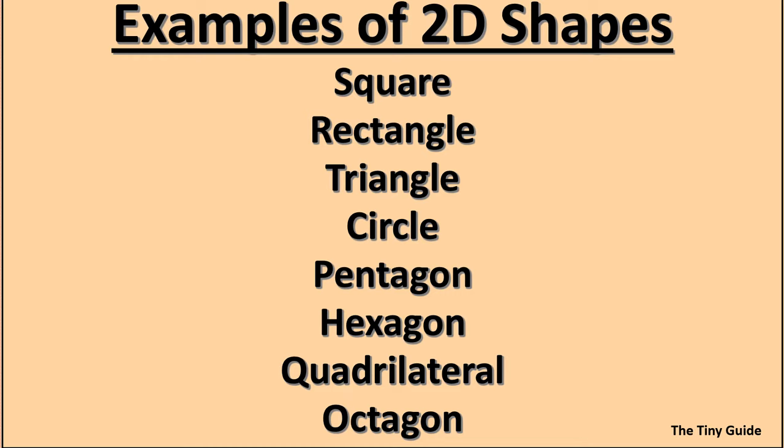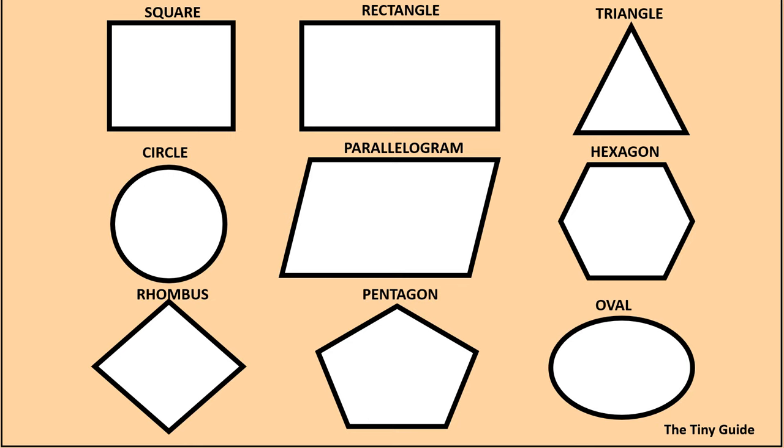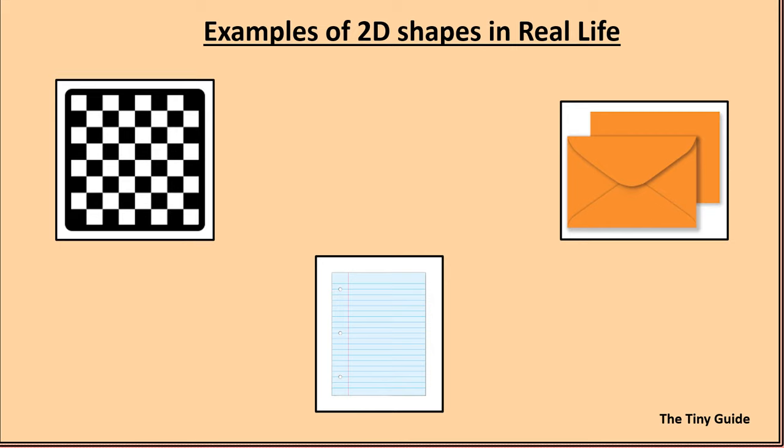Examples of 2D shapes are square, rectangle, circle, pentagon, hexagon, quadrilateral, and octagon. All these shapes have only length and height. These shapes are shown in the video.